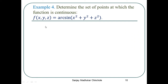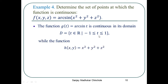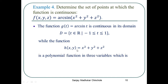Example 4: Determine the set of points at which the function is continuous. The function is given to be f(x,y,z) = arcsin(x² + y² + z²), where arcsin is the inverse sine function. The function g(t) = arcsin(t) is continuous in its domain, which is the closed interval [-1, 1], that is, the set of all real numbers t such that -1 ≤ t ≤ 1. The function h(x,y,z) = x² + y² + z² is a polynomial function in x, y, and z, and it is continuous everywhere.